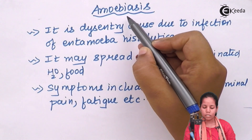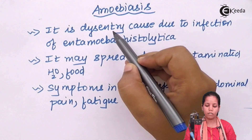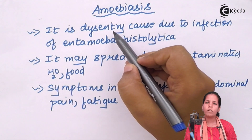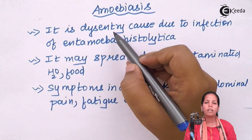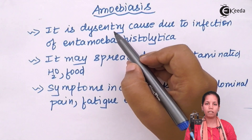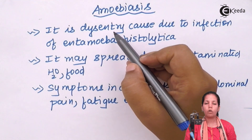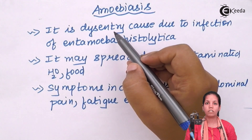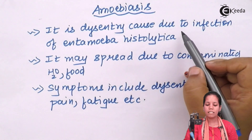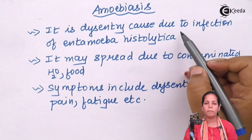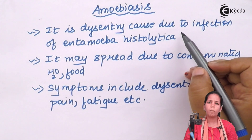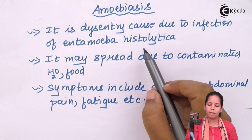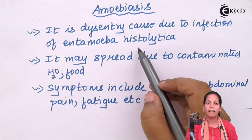Amoebiasis is closely related to dysentery, that is loose motions. During this process, a lot of fluids and salts are removed because frequent stool passing may lead to loss of water and salts, which can lead to dehydration, salt imbalance, and low blood pressure if not controlled. This infection is caused via the route of food or water by the organism Entamoeba histolytica.